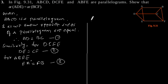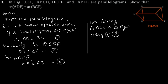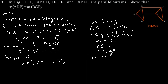Now considering triangle ADE and triangle BCF, and using equations 1, 2, and 3, that is AD equals BC, DE equals CF, and EA equals FB, by SSS congruence rule.